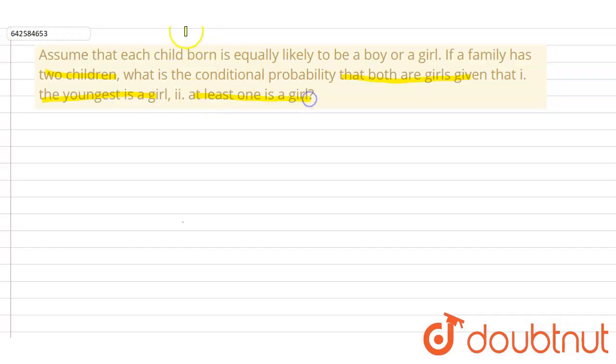For this question, we should write the sample space first. The sample space could be both are girls, one is a girl, or both are boys. For the first part, let's say A is an event where both are girls.